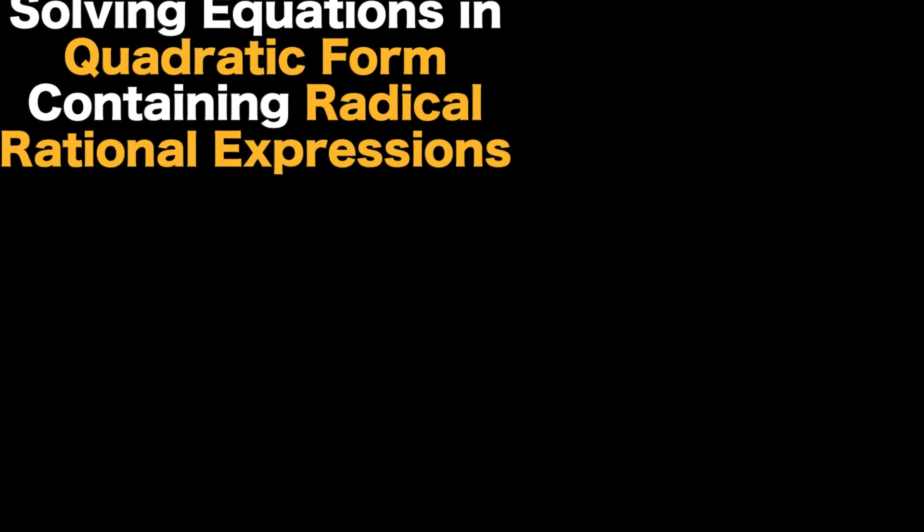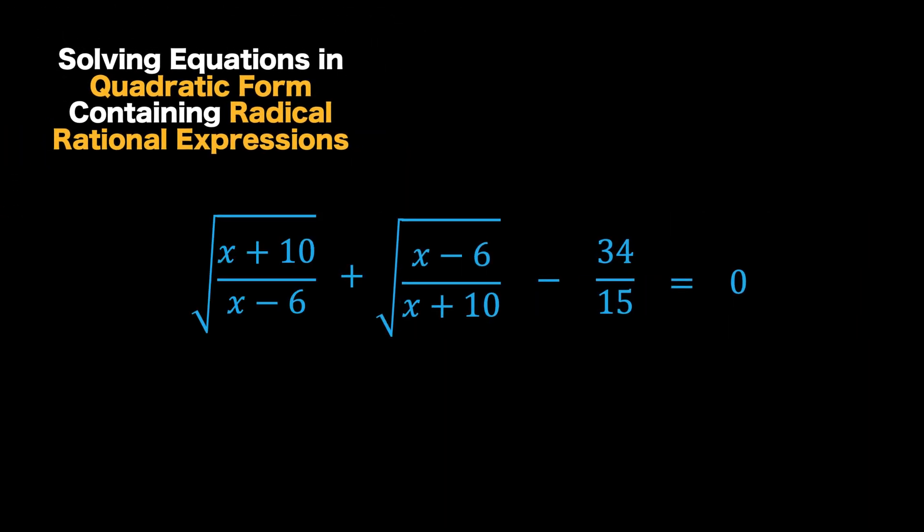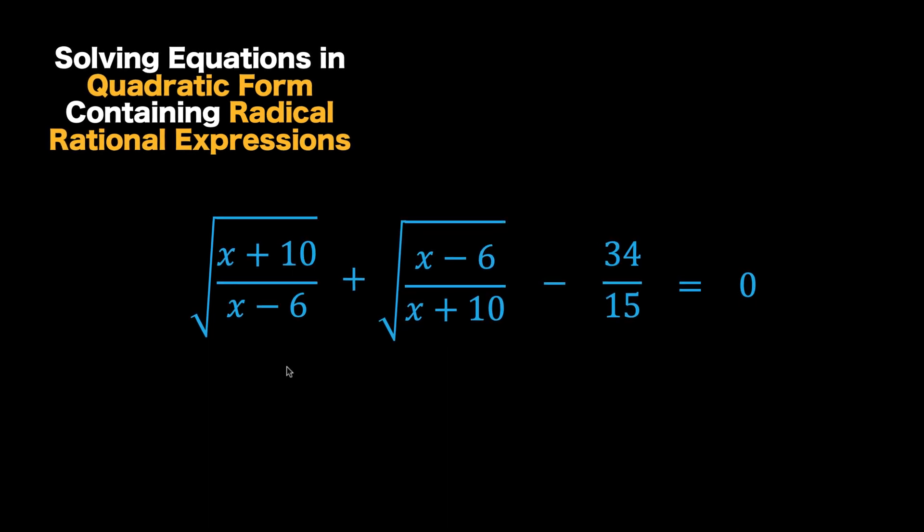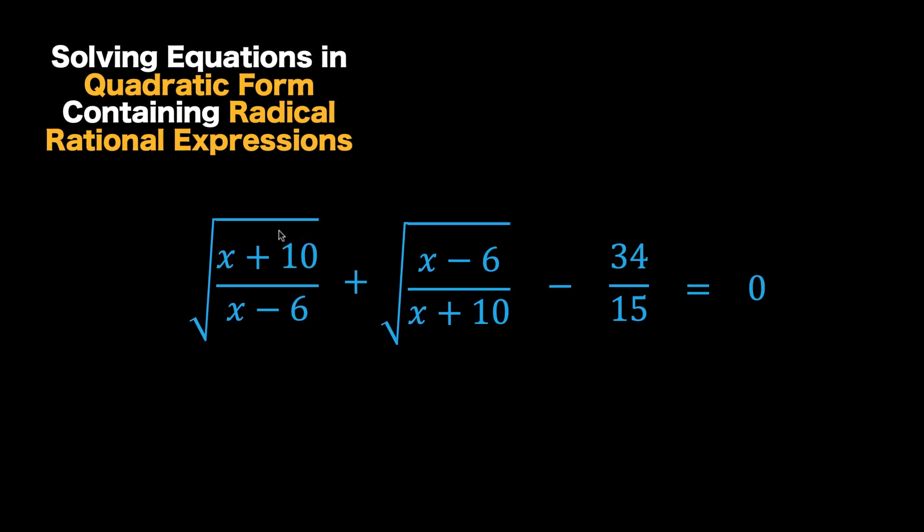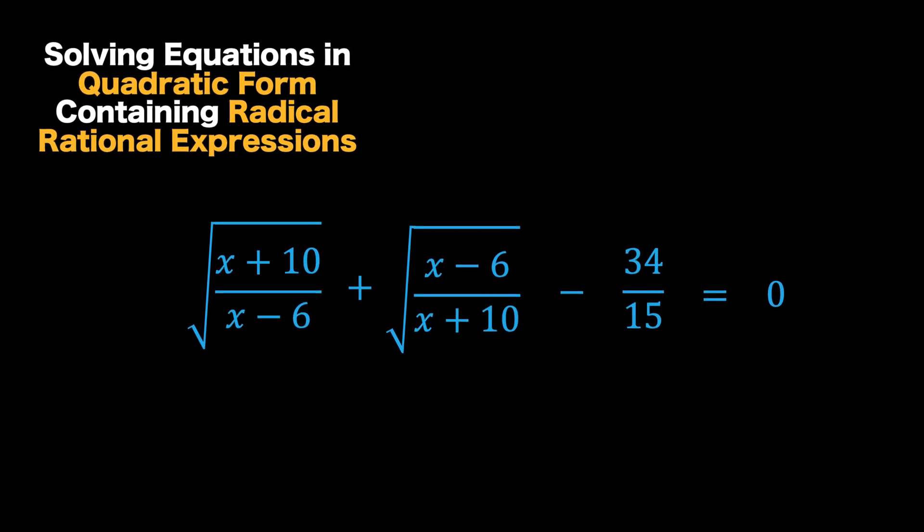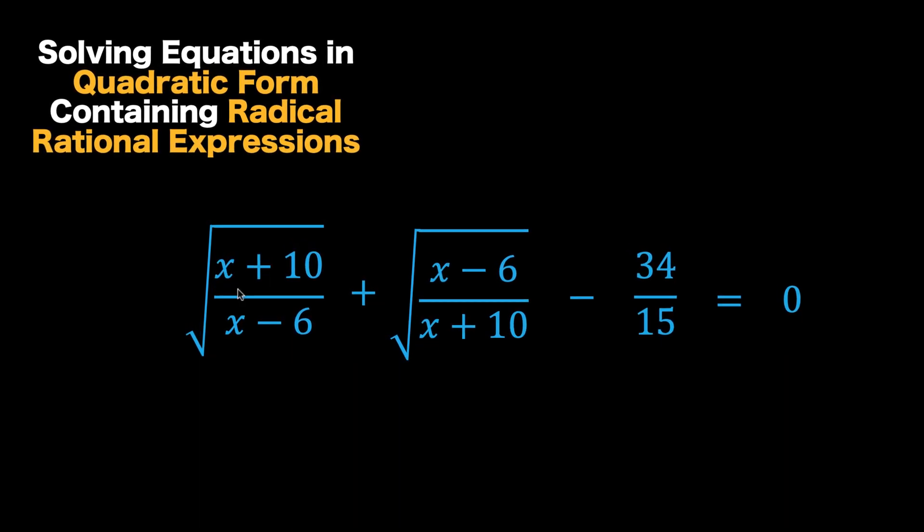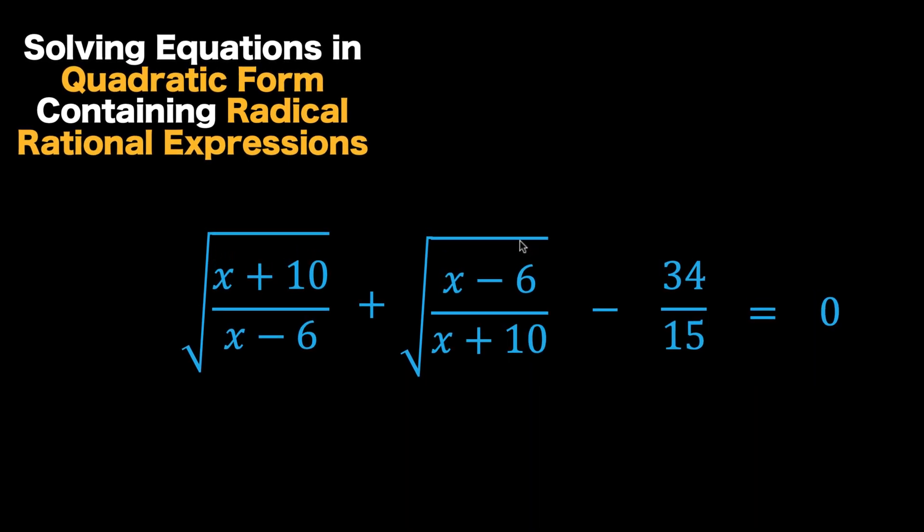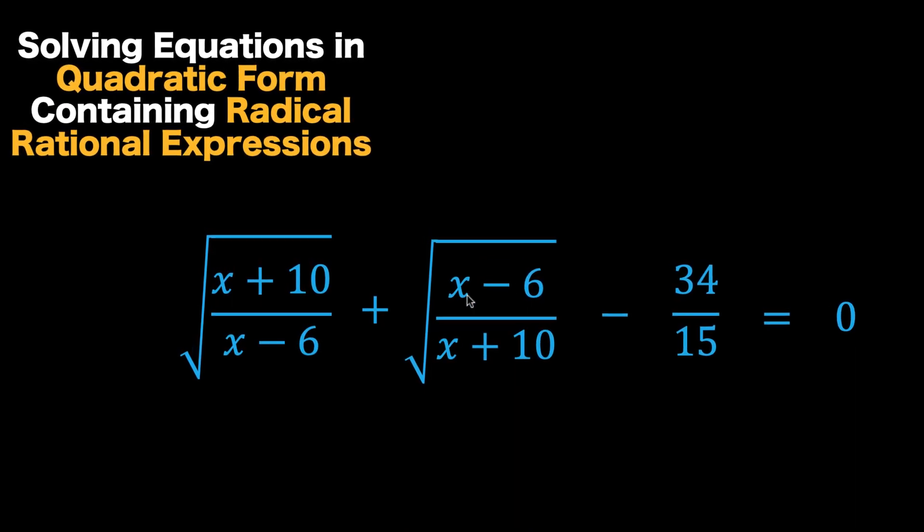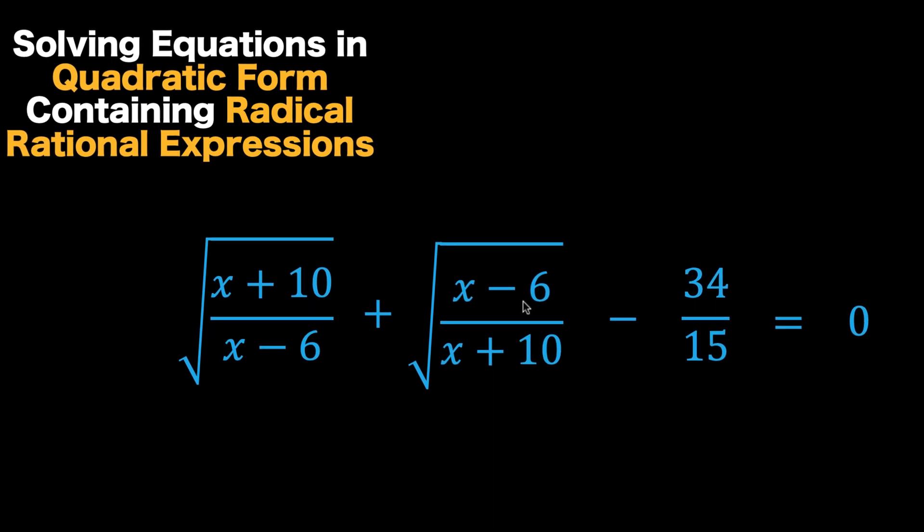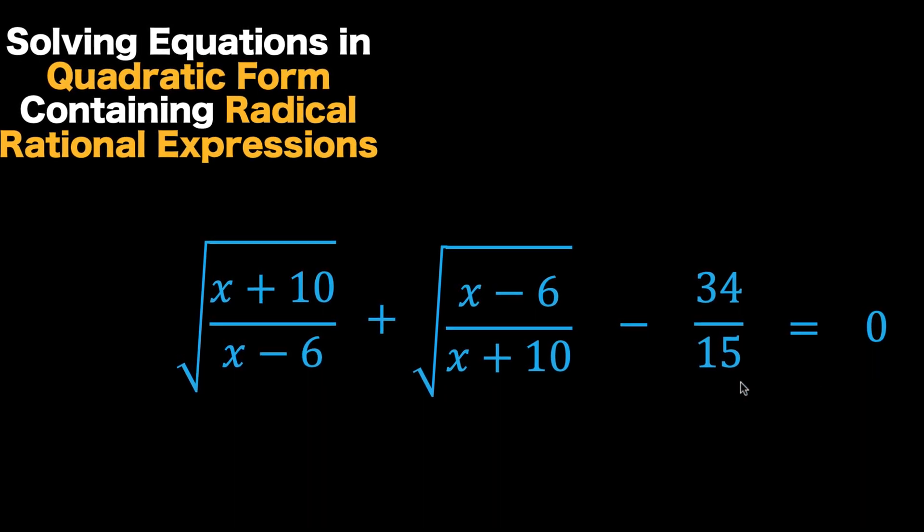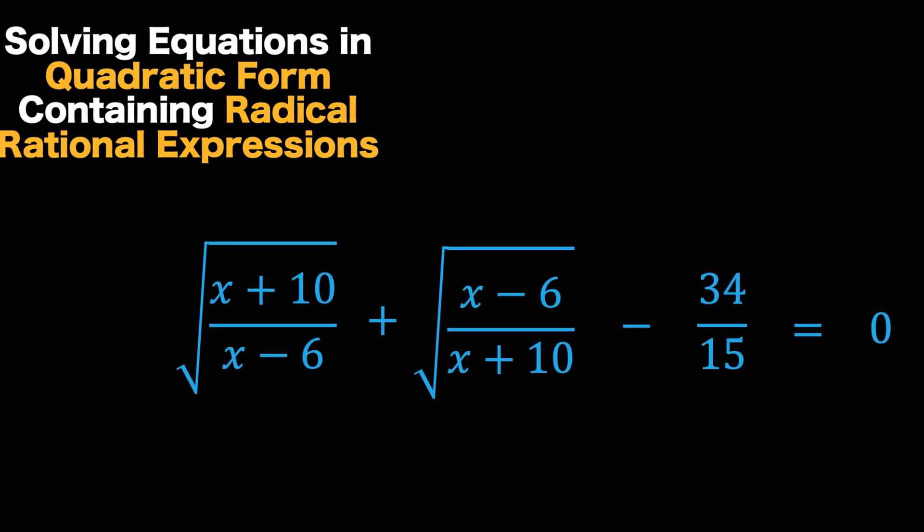And here is our problem. Let's say you are asked to solve this equation containing radical rational expression. We have here a radical expression, and inside the radical is a rational expression, x plus 10 over x minus 6. And here is another radical expression containing rational expression x minus 6 over x plus 10 minus 34 over 15 equals 0. Find the value of x.